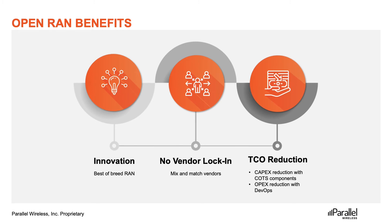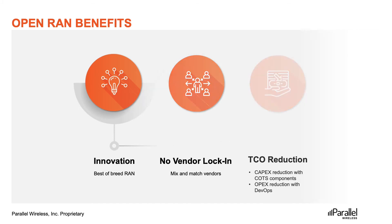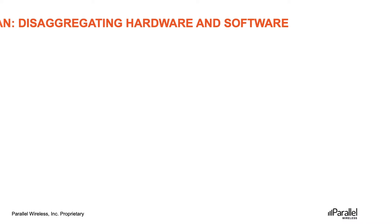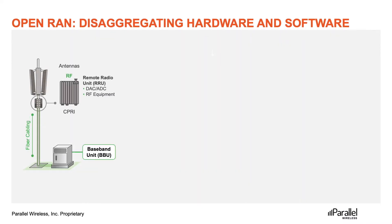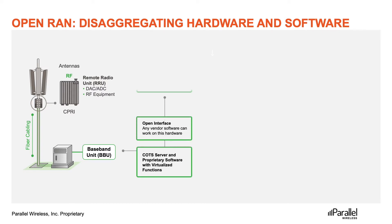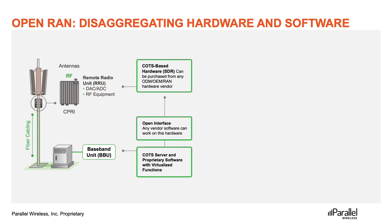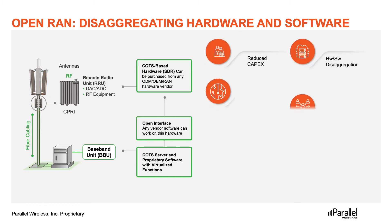Open RAN is trying to disrupt traditional RAN solutions that are closed, proprietary, and siloed, involving vendor lock-in. RAN represents around 60% of CAPEX and OPEX, so reducing RAN cost will significantly help service providers. Open RAN is a software-based solution with open interfaces that can be hosted on general-purpose COTS hardware. RRUs can be bought from ODM/OEM hardware vendors, and open interfaces between components enable interoperability, thus avoiding vendor lock-in.